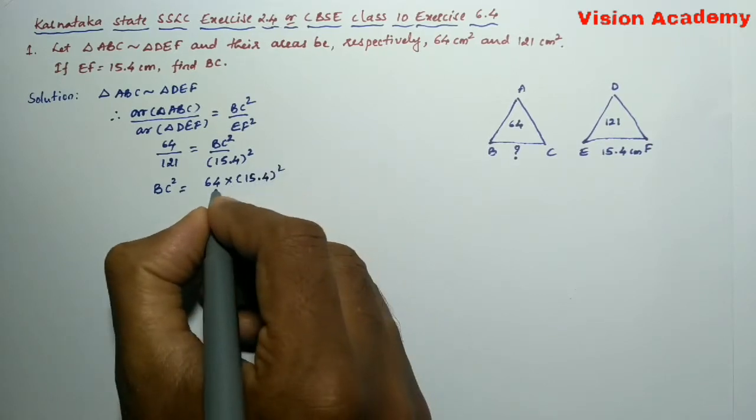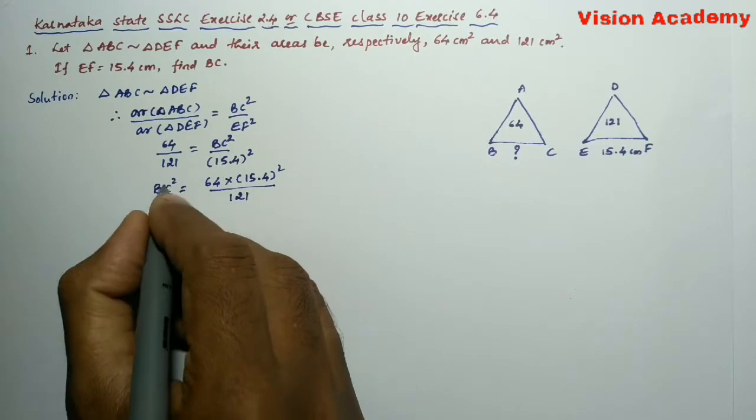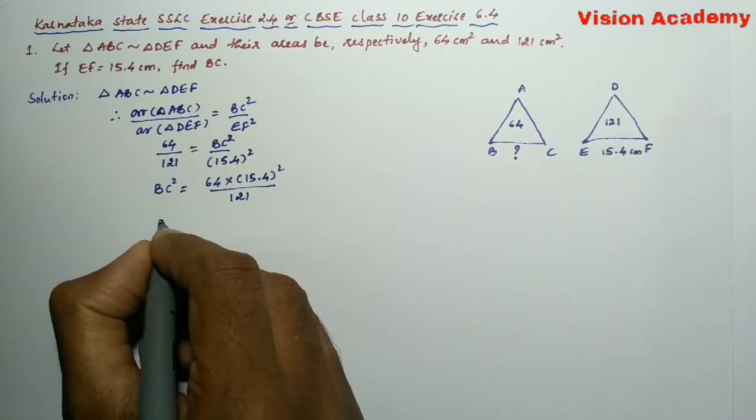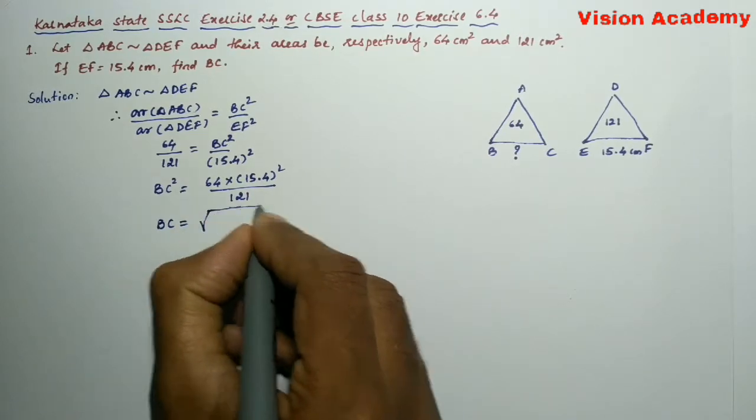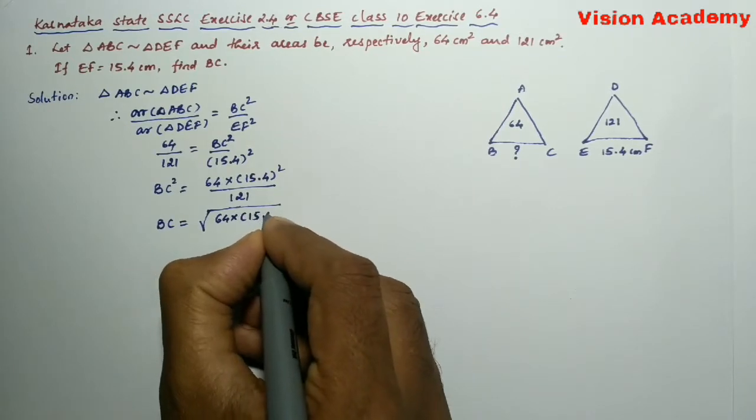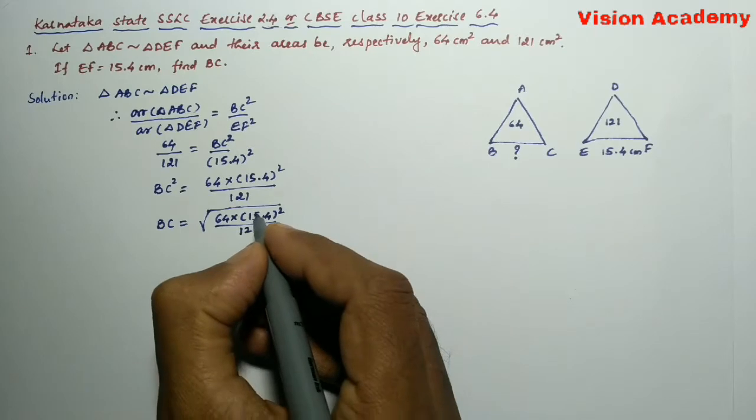So we have 64/121 equals BC² divided by 15.4². Now transform this square from LHS to RHS. It will become square root. Square root of 64 times 15.4² divided by 121.